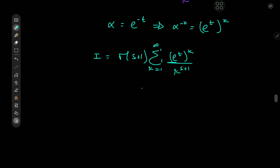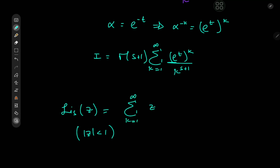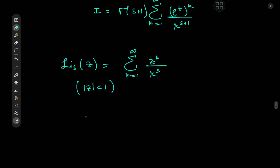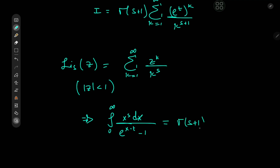There's a very cool function that has this kind of series expansion, and that is the polylogarithm. The polylogarithm of order s at some z, where the absolute value of z is supposed to be less than 1 for the series to converge, equals the sum over k from 1 to infinity of z to the k divided by k to the s. In our case we have e to the t, with t being negative, so e to the t is in fact less than 1. And we have exactly the same series expansion, except with s replaced by s plus 1. This implies that the integral from 0 to infinity of x to the s dx divided by (e to the x minus t minus 1) equals gamma(s plus 1) times the polylogarithm of order s plus 1 at e to the t.